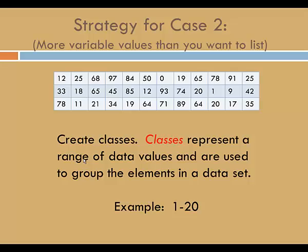For case 2, we need a different strategy. In this case, there will be more values than we want to list. Consider the table of values at the top of the screen, where we have numbers ranging from 0 to 97. Rather than list all of the numbers from 0 to 97, I want to create classes. Classes represent a range of data values and are used to group the elements in a data set. An example of a class would be 1 through 20.